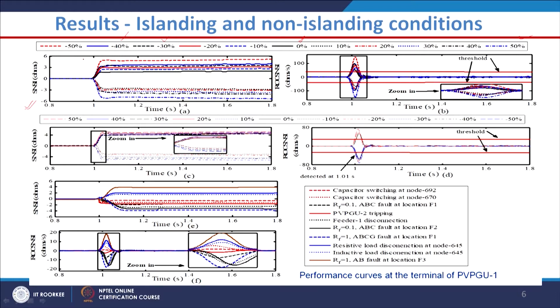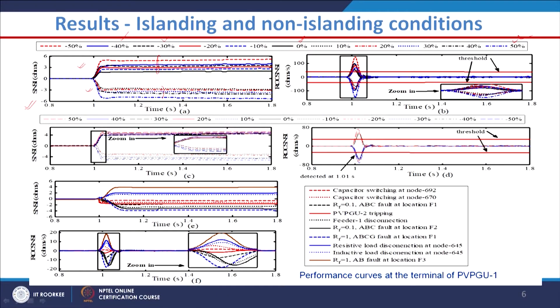For negative active power mismatch (e.g., −50%, −40%), the SNSI values lie in the positive direction. For positive mismatch (+10%, +20%, +30%), the SNSI values lie in the negative direction. This is because during positive power mismatch, P_load > P_DG, meaning load is more and generation is less in the islanded microgrid.